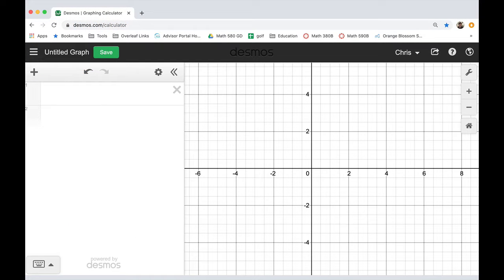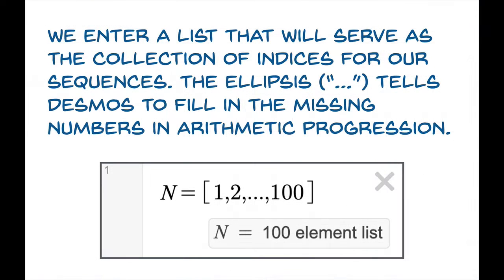Now Desmos is this wonderful online tool that everybody should know about, and the first thing we're going to enter to get our graphs of sequences is a list. This list is going to serve as the collection of indices, so if we just enter n equals and then use the syntax with square brackets, comma separated entries, the 1 comma 2 establishes the pattern of an arithmetic progression with difference 1.